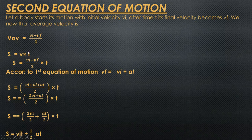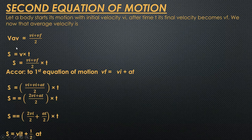We know that the distance formula is s = v·t. Here the velocity we are using is the average velocity. So we substitute the average velocity value into this equation and get: s = [(v_i + v_f) / 2] × t.